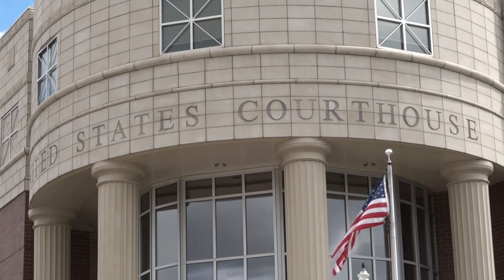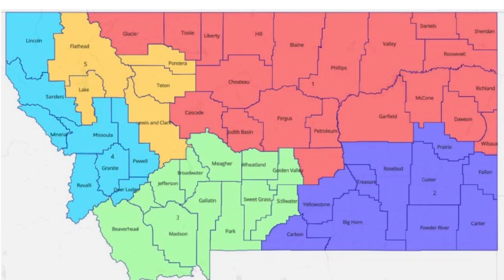As directed by the federal court, Jacobson this week submitted a map which makes minimal changes to the current districts. Her proposal keeps Glacier and Musselshell Counties in district one, which covers North-Central Montana.